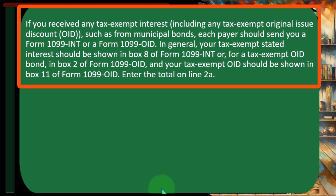With interest, it's usually fairly straightforward because you'll get the documentation in the form of a 1099 from the financial institution. Your tax-exempt stated interest should be shown in Box 8 of Form 1099-INT, or for a tax-exempt OID bond, in Box 2 of Form 1099-OID. Your tax-exempt OID should be shown in Box 11 of Form 1099-OID.